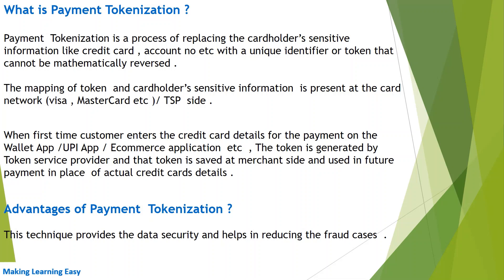This token is basically a unique number which is assigned or mapped with the customer's sensitive information, and the mapping is present at the token service provider's end. When the customer enters the credit card details for the first time on a wallet app, UPI app, or e-commerce application, the token is generated by the token service provider and that token is saved at the merchant site for use in future payments in place of actual credit card information.